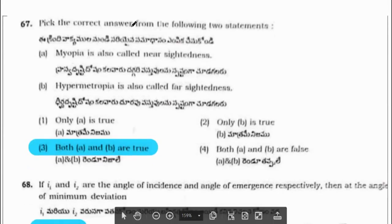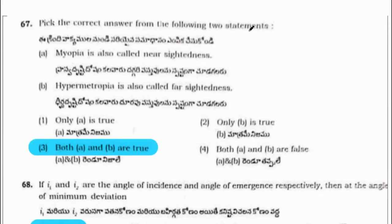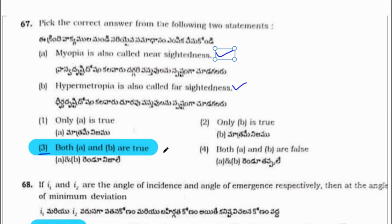Pick the correct answer from the following two statements. Myopia is also called nearsightedness. Hypermetropia is also called far sightedness or long sightedness. Both A and B are correct, so the correct option is 3 — both A and B are true.